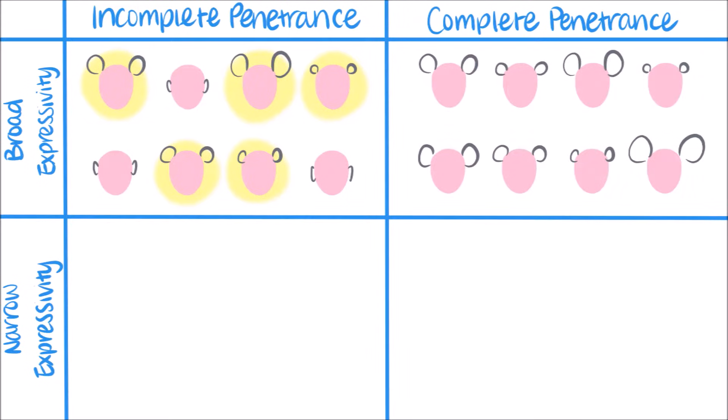A trait with complete penetrance and broad expressivity would look like this. Everybody with the genotype is expressing the mouse ear phenotype, but not everyone has the phenotype to the same degree.